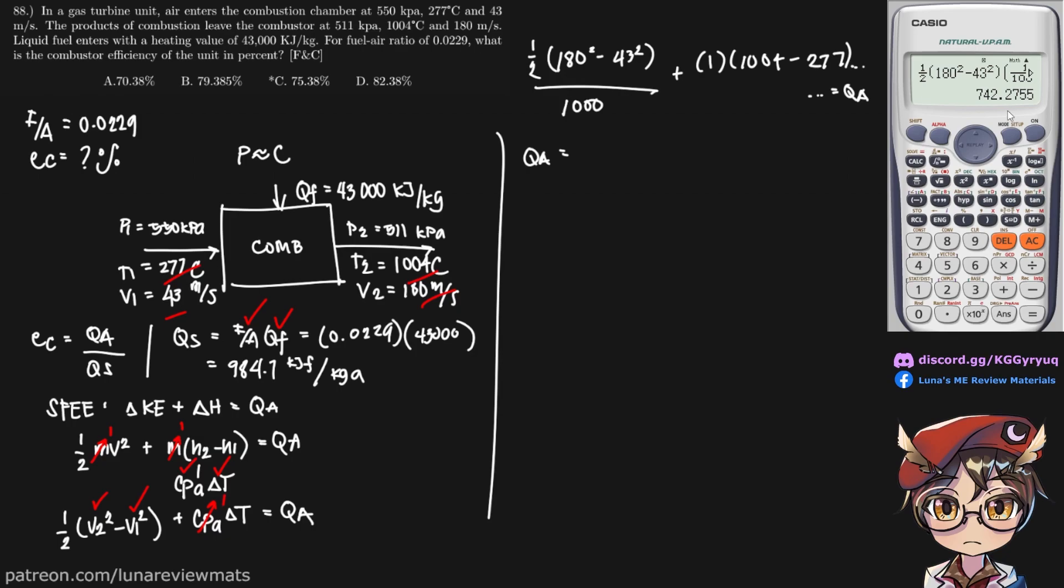And we get a value of 742.28, 742.28 kilojoules of fuel per kilogram of air.